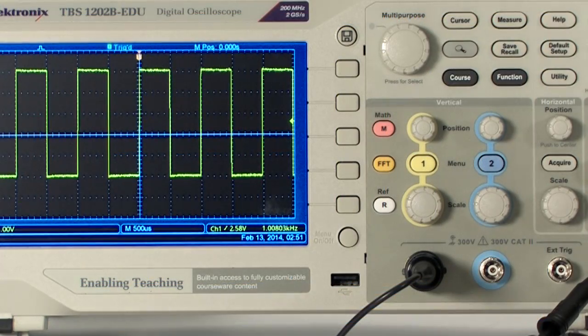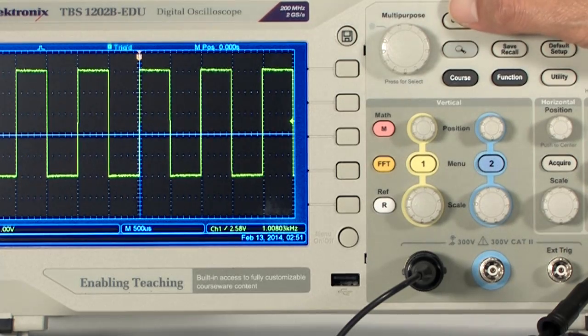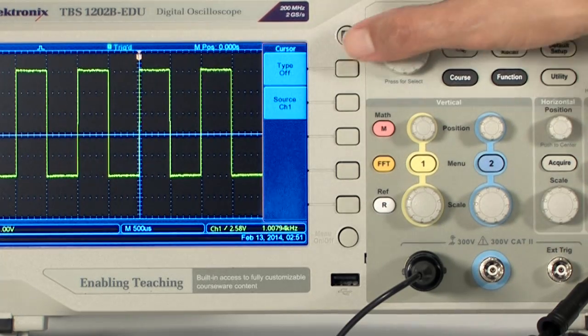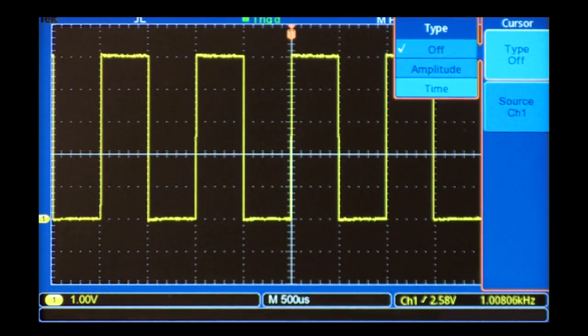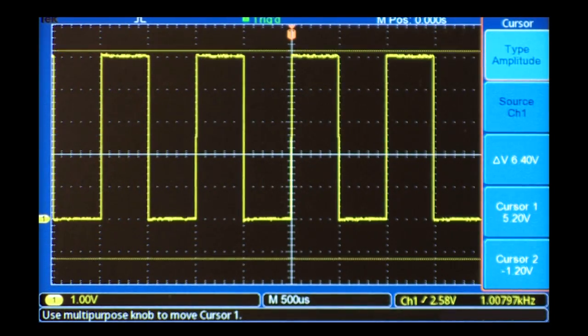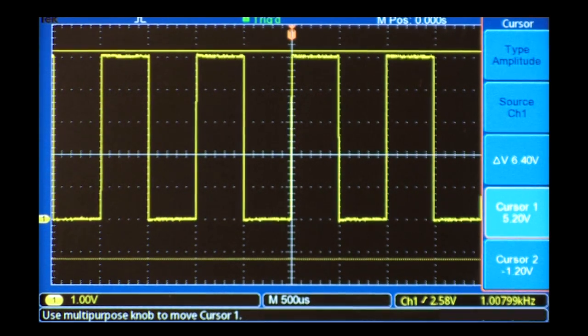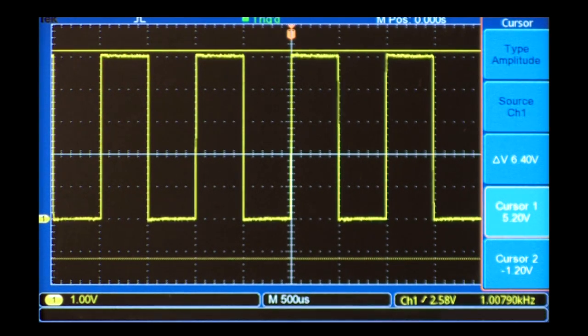Cursors can also be used to make voltage and time-related measurements. They incorporate the scale settings to read out directly in volts and seconds. To measure voltage, set the measurement type to amplitude. This brings up two horizontal cursors. Since the signal is connected to channel 1, I need to make sure that it's the source for the cursor measurement.